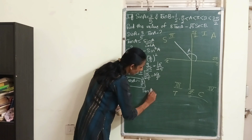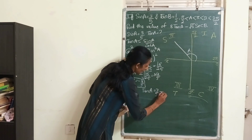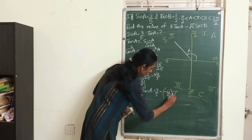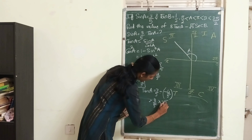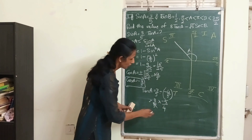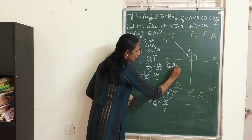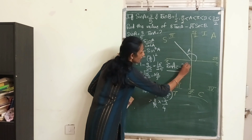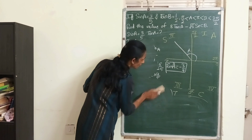Now that I know sin A and cos A, let me find tan A. Tan A = sin A / cos A = (3/5) ÷ (−4/5). Multiplying by the reciprocal, the 5s cancel, giving tan A = −3/4.